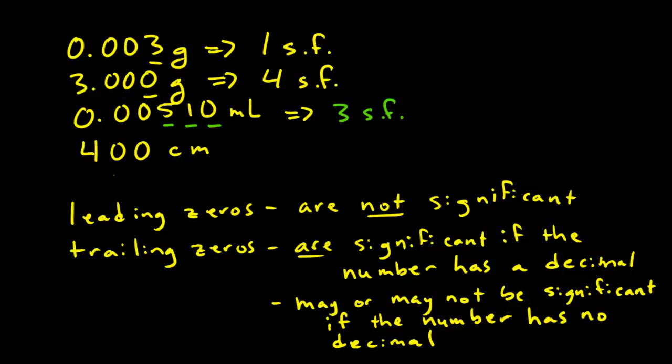Finally, in the case of 400 centimeters, this number has no decimal. This means that the trailing zeros may or may not be significant. If the measurement was made to the nearest 100, we would have one significant figure. If it was made to the nearest 10, we'd have two significant figures. And if it was made to the nearest one, we would have three significant figures. Therefore, the number of significant figures is ambiguous, and we could have anywhere from one to three significant figures.